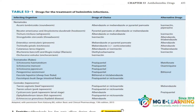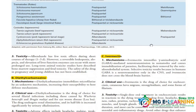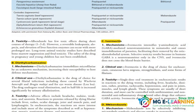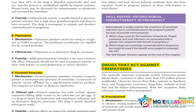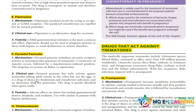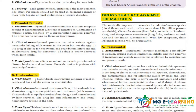The next important drug on this page is Mebendazole. Mebendazole is also important, so you need to know its mechanism of action, clinical uses, and adverse effects. Another example is Pyrantel — you also need to know its mechanism of action.